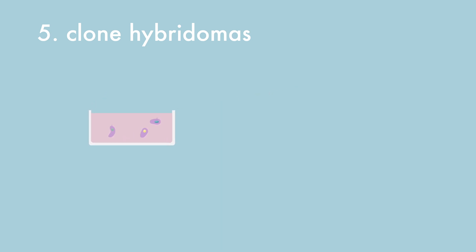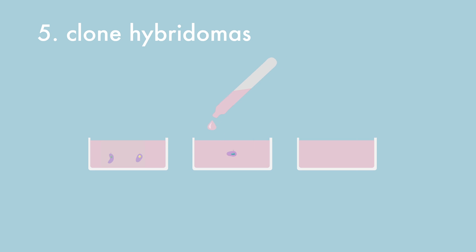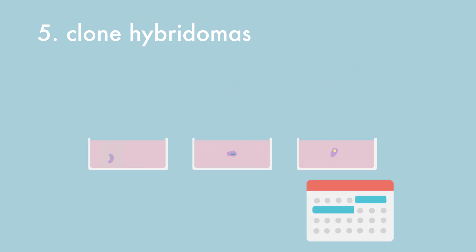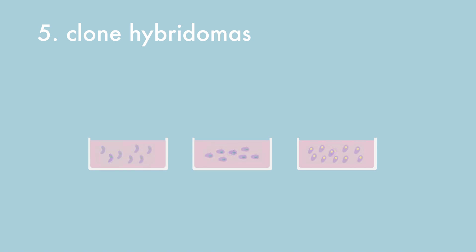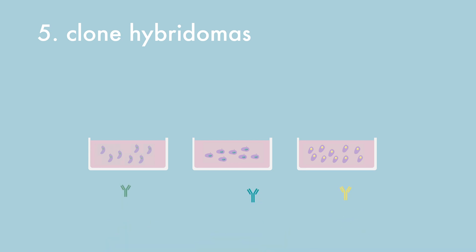After polyethylene glycol treatment, the cells are diluted and divided over several dishes. After approximately two weeks, individual clones are visible. Each clone contains the descendants of a hybridoma cell and will produce one particular type of antibody. That is why they are called monoclonal antibodies.